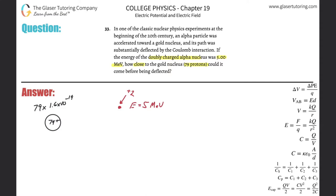So 79 times 1.6 times 10 to the minus 19th. This is 1.264 times 10 to the minus 17th Coulombs. That's the total charge there of the gold nucleus.